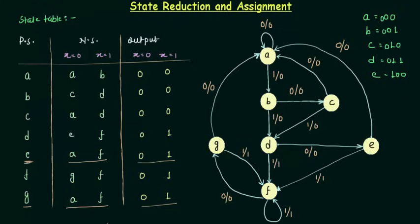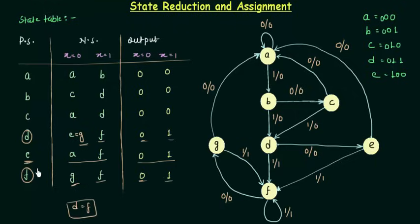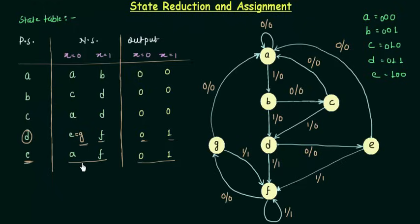Since E and G are equivalent, I can write E equal to G and eliminate G from this table. Now with E equal to G, if I compare D with F I can see the next states are the same - G, F becomes E, D - and the output 01 is also the same. So D is equal to F and hence I can eliminate F as well. We have now got the minimal possible state table.